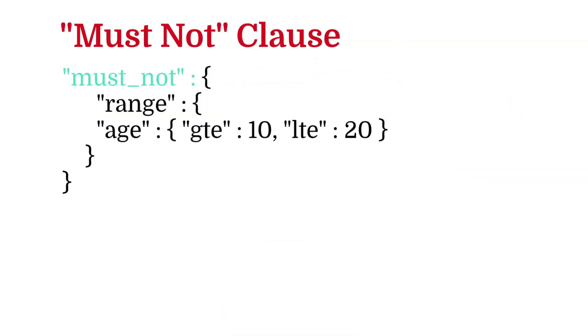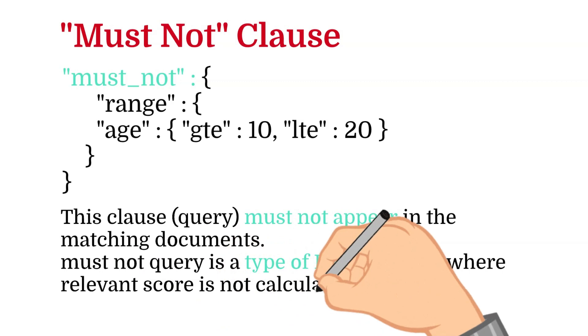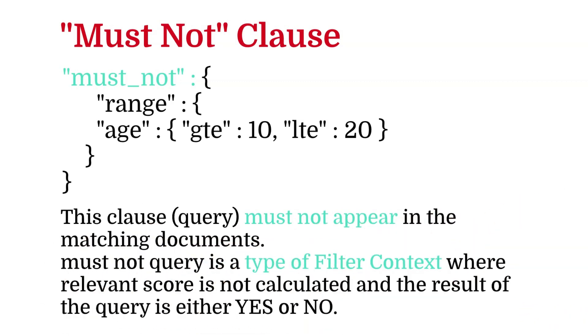The next boolean clause is must not. This clause must not appear in the matching documents. It is the reverse of the previous one. Must not query is a type of filter context where relevant score is not calculated and the result of the query is either yes or no. Frequently used filters will be cached automatically by Elasticsearch to speed up the performance.